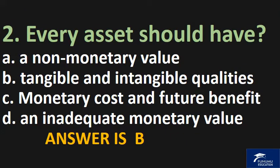Every asset should have: A. a non-monetary value, B. tangible and intangible qualities, C. monetary cost and future benefit, D. an inadequate monetary value. The answer is B.